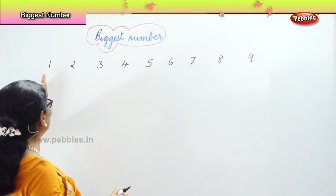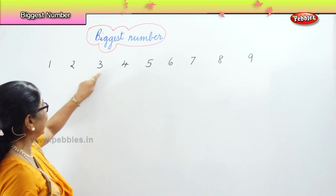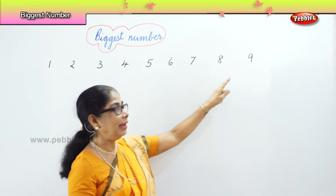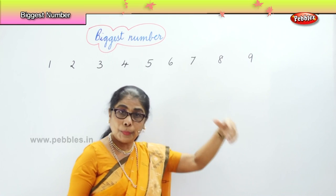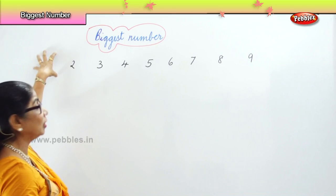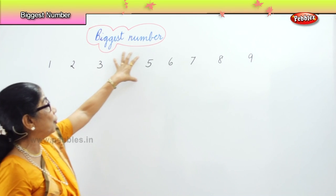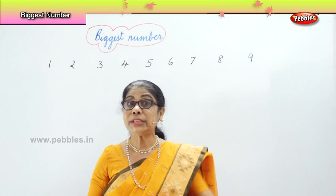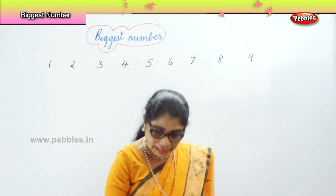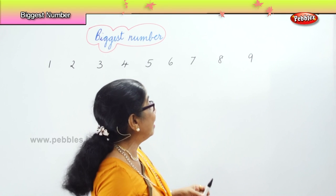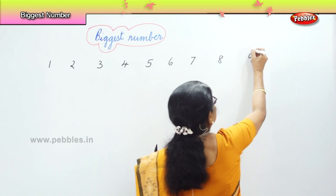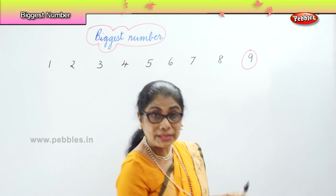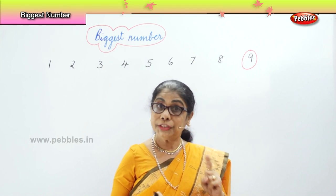Among these numbers — one, two, three, four, five, six, seven, eight, nine — supposing I say there is one chocolate, two chocolates, three, four, five, six, seven, eight, nine. Which is the biggest? Definitely it is nine. Nine is the biggest single digit number.